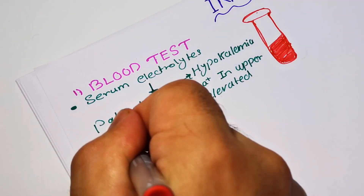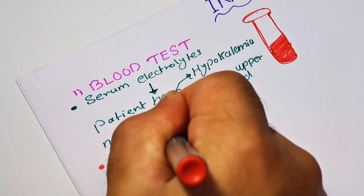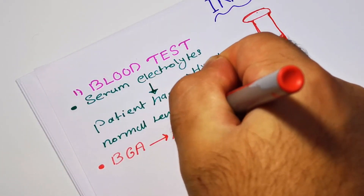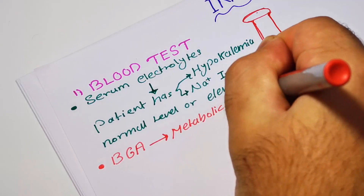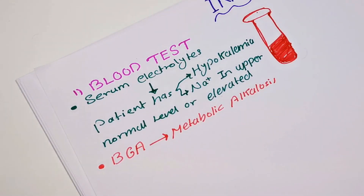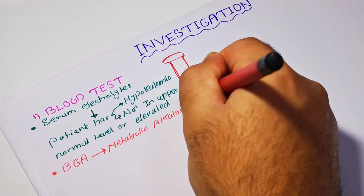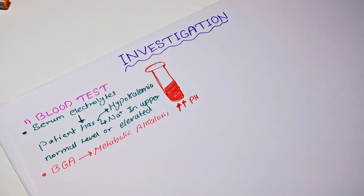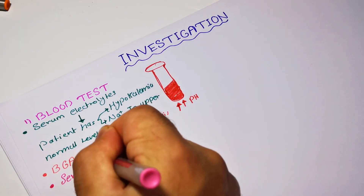Second, we have blood gas analysis. Blood gas analysis is very important to obtain. This patient may develop metabolic alkalosis, as protons are lost in the urine. So the pH may be elevated.